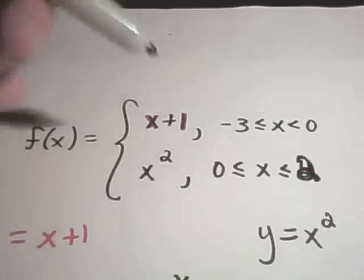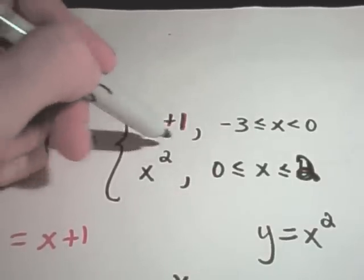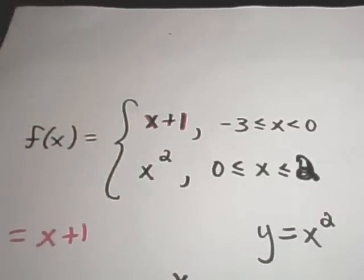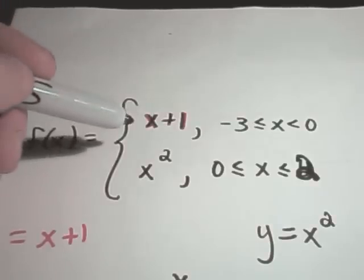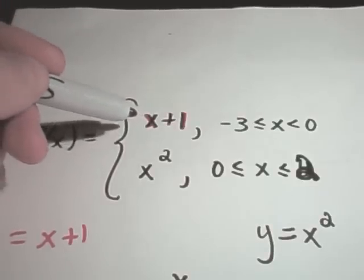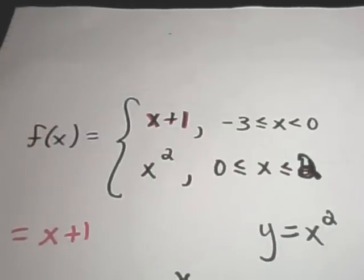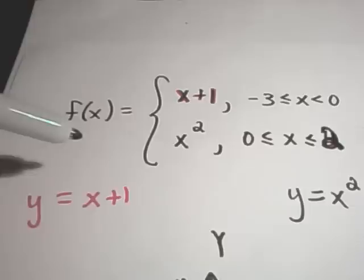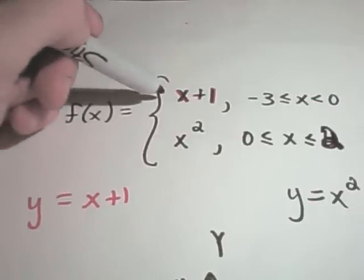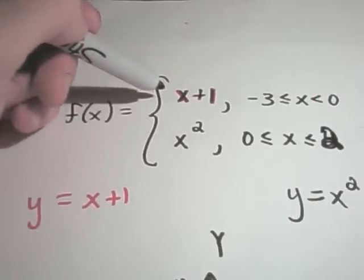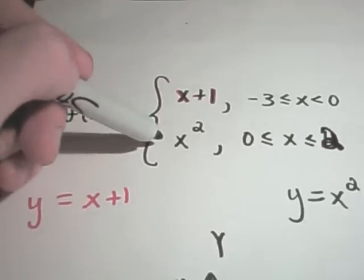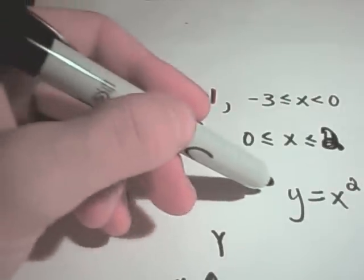To graph piecewise defined functions you have to know what the graphs of each piece look like beforehand, otherwise you're going to have a hard time. Let's graph the first piece first — I'm labeling it in red. So think about the graph y equals x plus 1, and in a moment we'll graph y equals x squared.